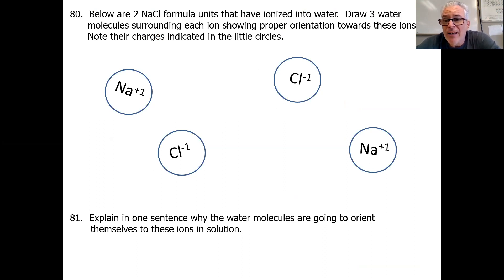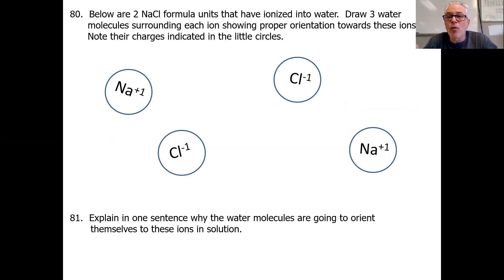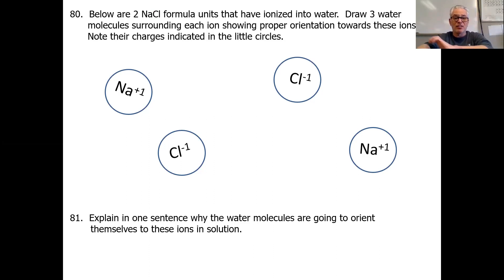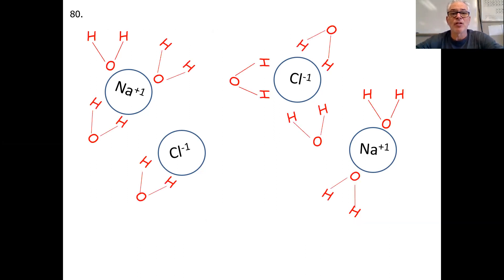Here we have two sodium chloride ions — two sodiums and two chlorides. Imagine you put salt into water. If we had these ions in solution, the water would orient itself to these ions. The sodium ions are both positive, so they would attract the negative oxygen sides of water. The chlorides are both negative, so they would attract the hydrogen sides of water. The water molecules themselves are literally going to orient themselves to these ions.